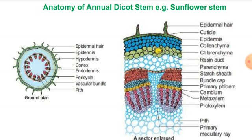Periderm is the outermost protective covering. It is the specialized covering made by three different types of tissues: cork, cork cambium, and secondary cortex. In the sunflower stem, periderm is not formed, meaning the secondary growth cannot take place in the non-vascular region.